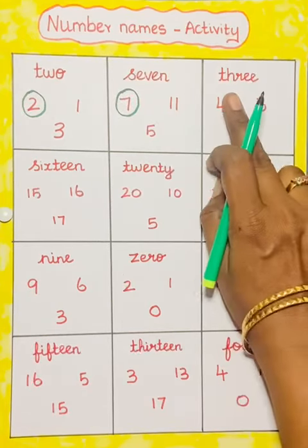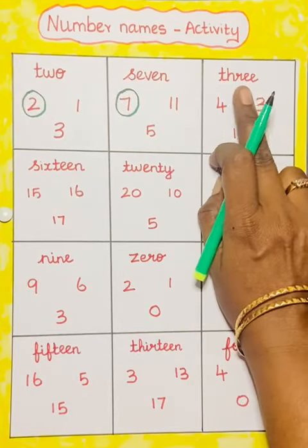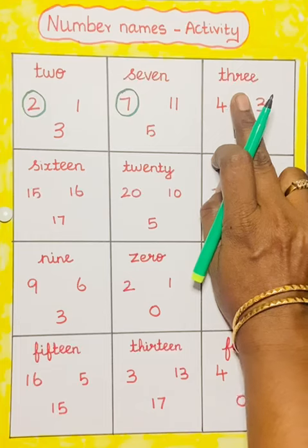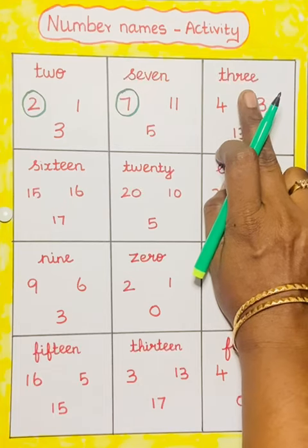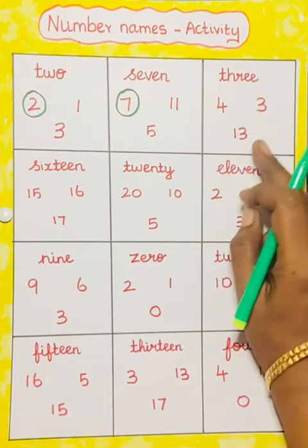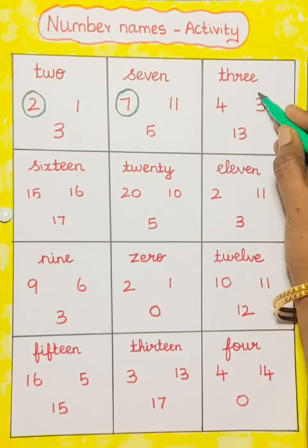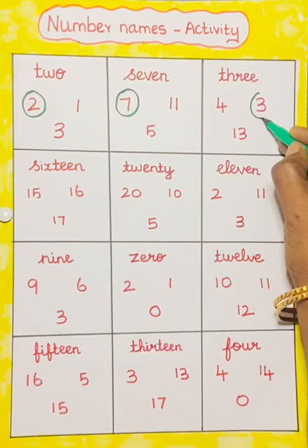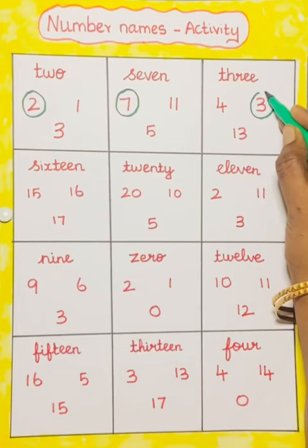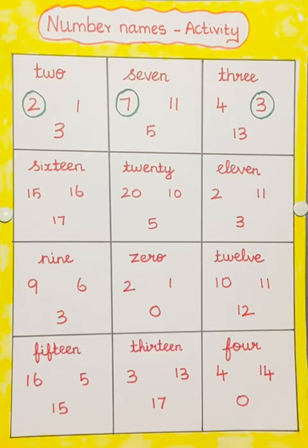Next one: 3. T-H-R-E-E. 3. Where is 3? Here. Just circle the 3.